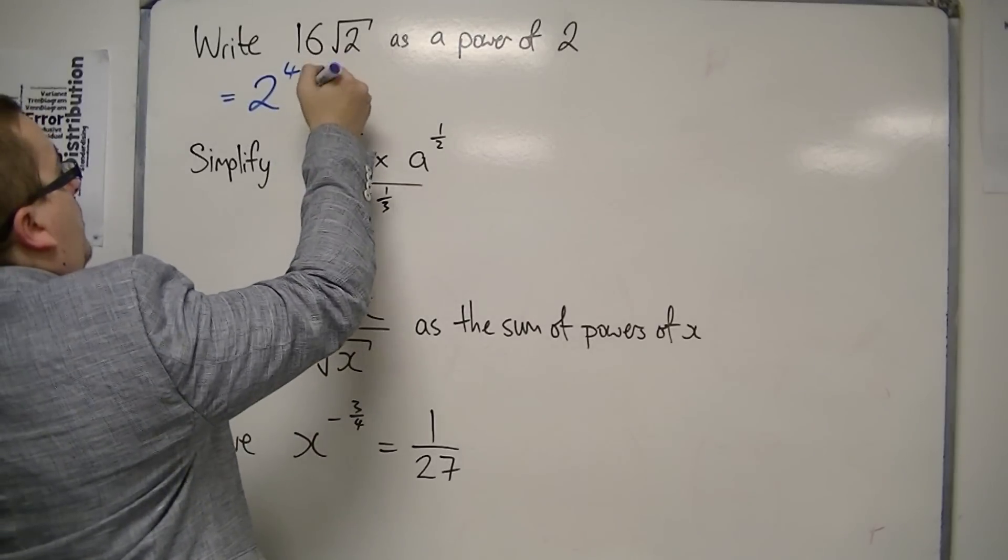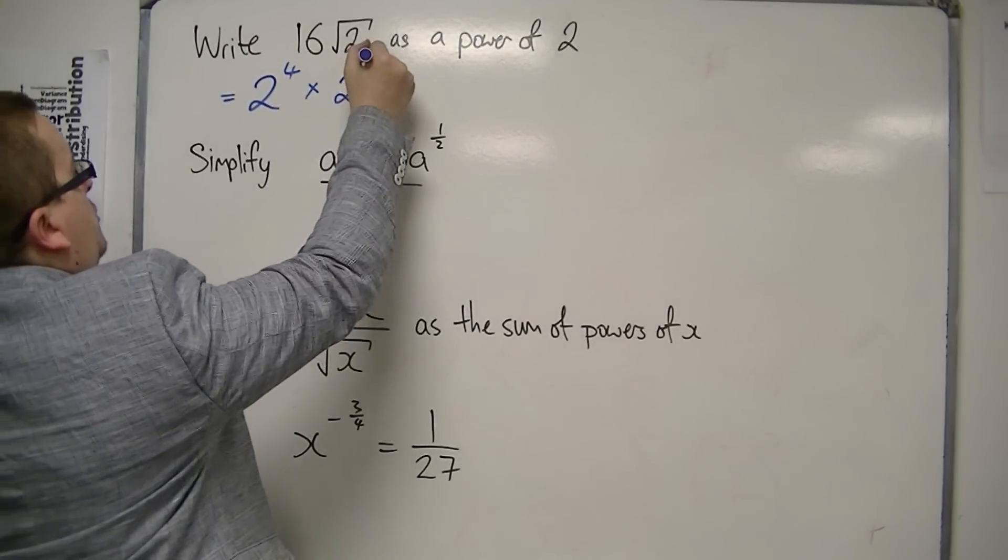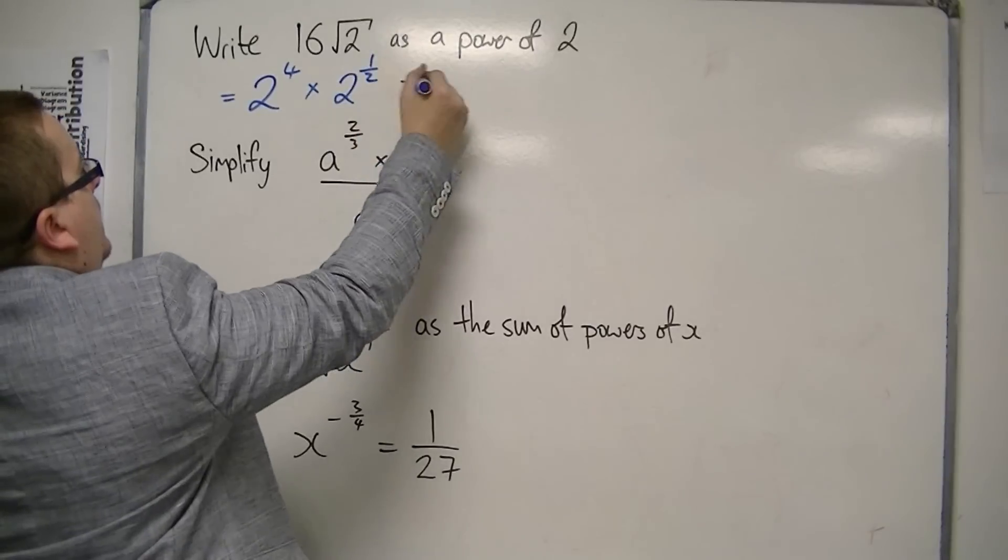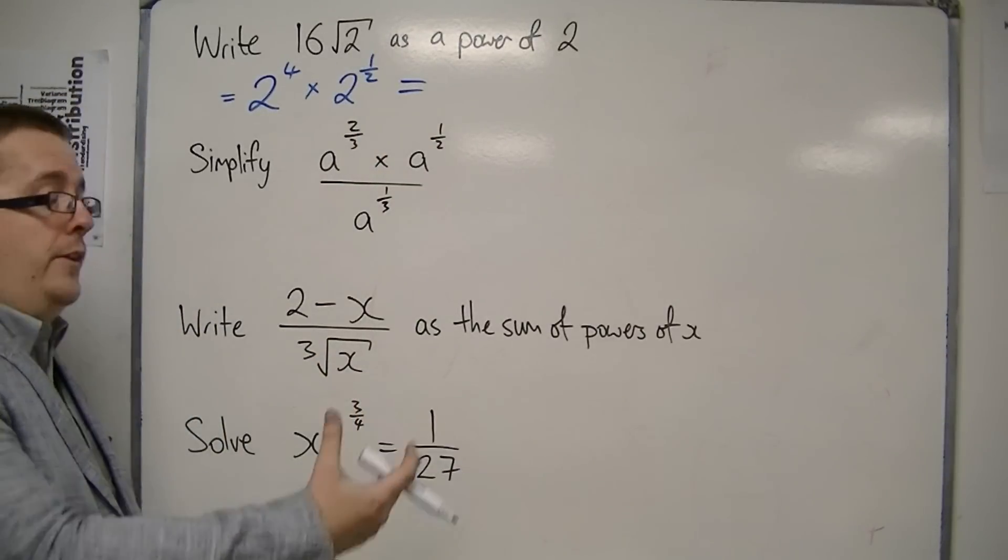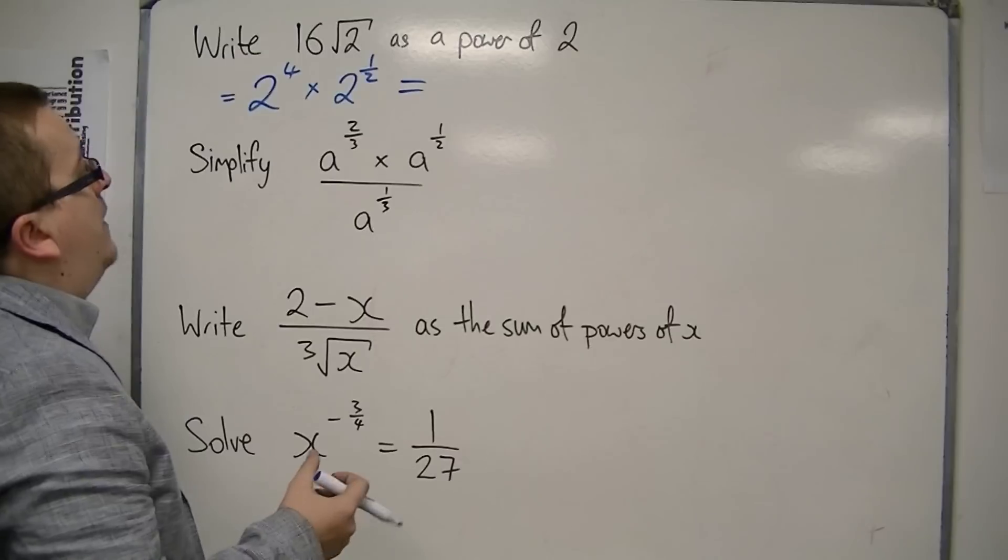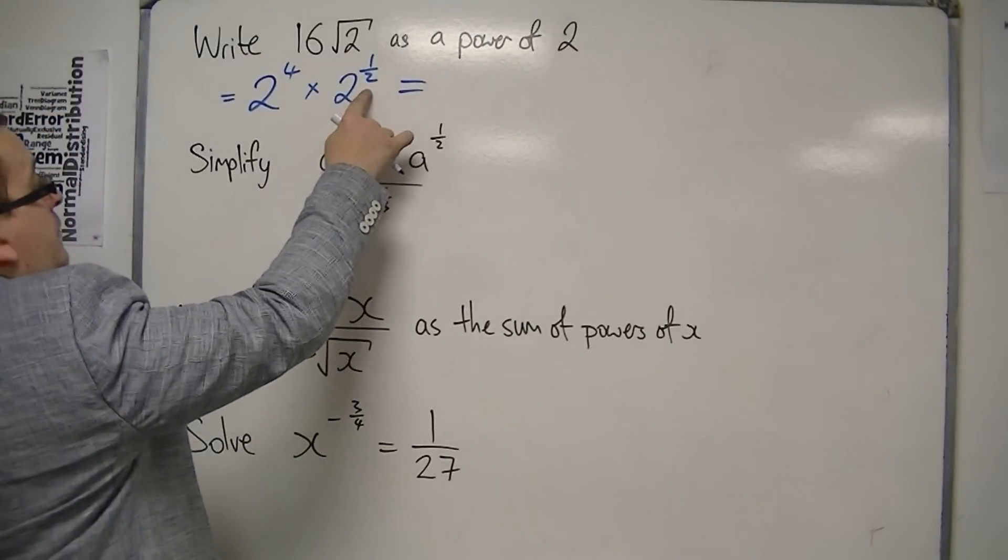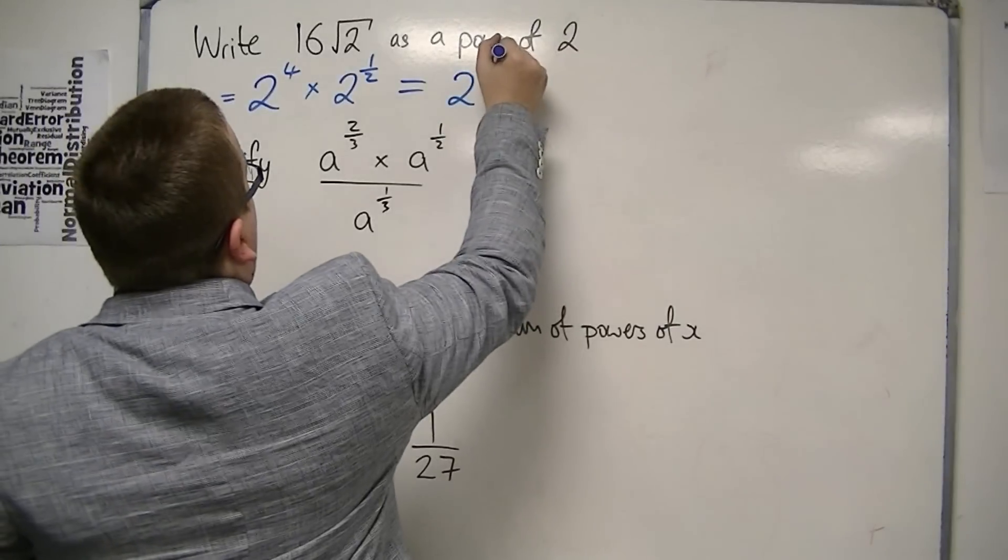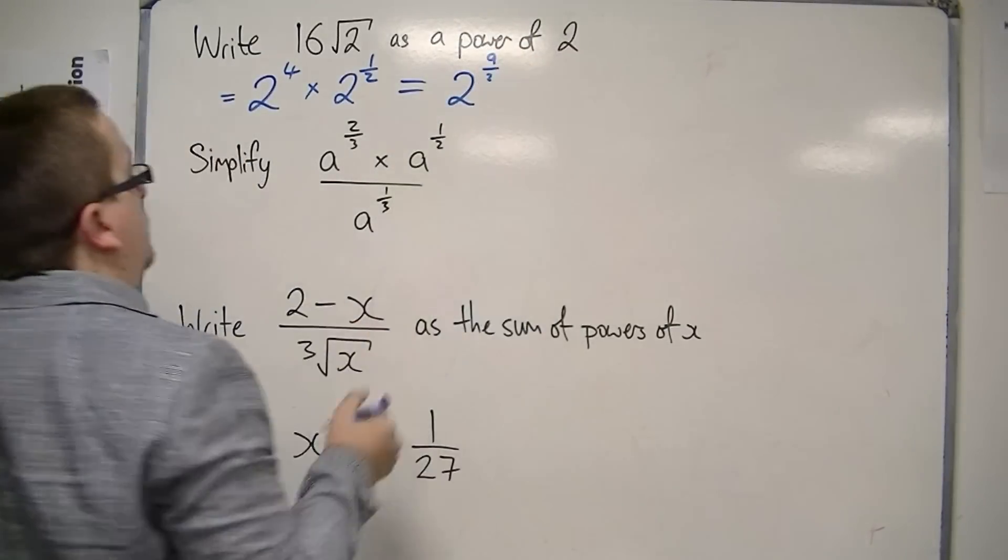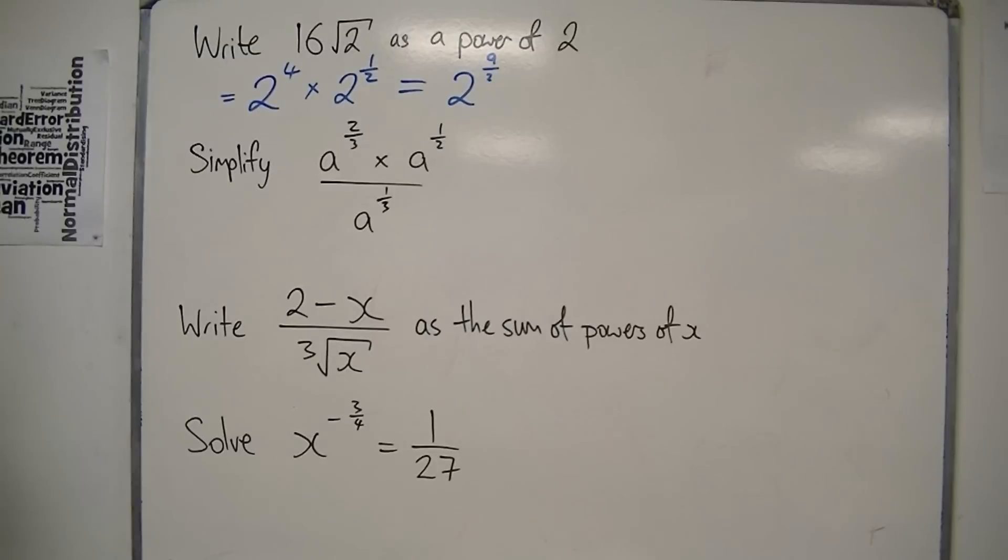Then we're multiplying that by root 2, which is 2 to the power of 1/2. So, now that you've got 2 to the something times 2 to the something else, you can add the indices together. We've got 4 plus 1/2, so that's 4 and 1/2, which is 9/2. So, this is 2 to the power of 9 over 2, or 4.5.